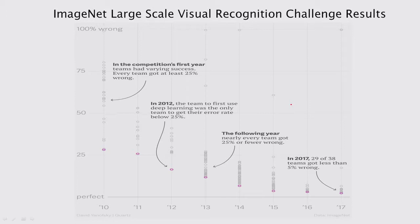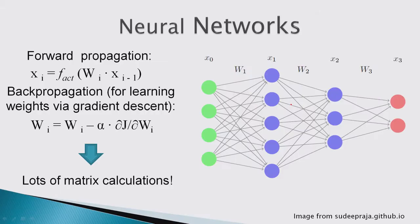This basically visualizes what was just said — the error rates drop very significantly from year to year as convolutional neural networks get better. Since pretty much every winner in this competition used CNNs, I want to say a few words about those.